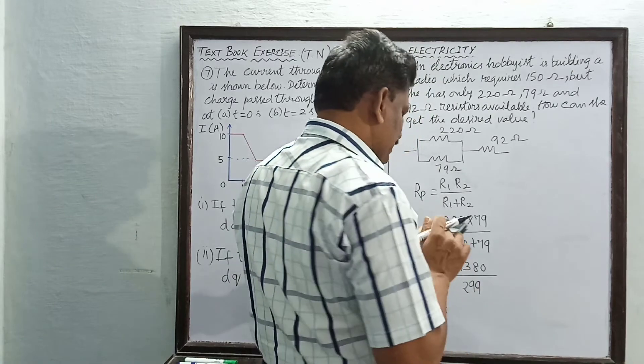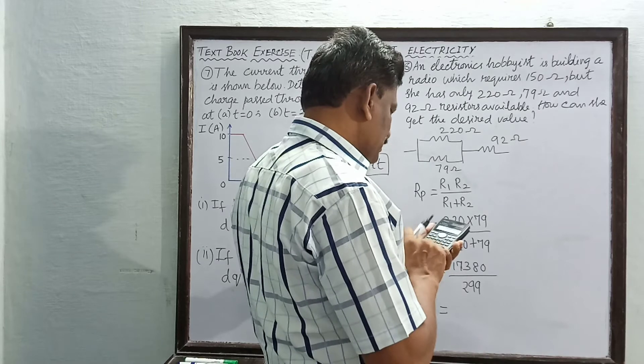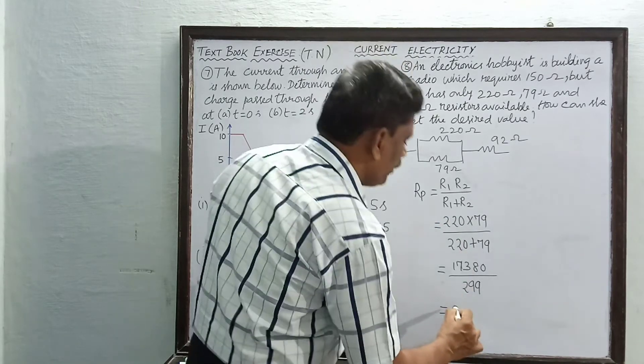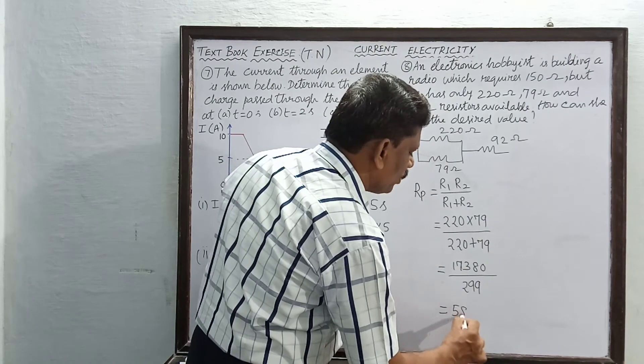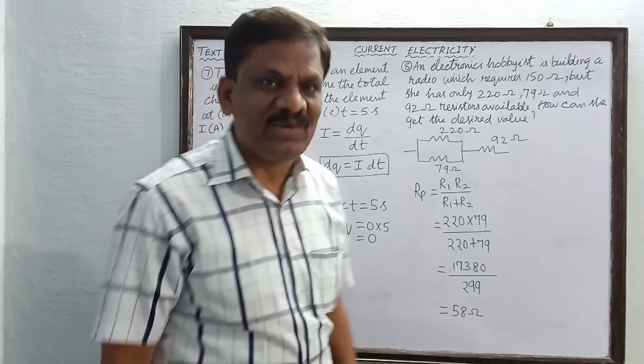This is 17380 divided by 299, so this is found to be 58. This is found to be 58 ohms.